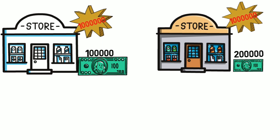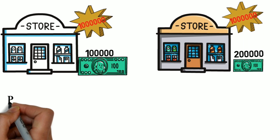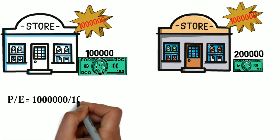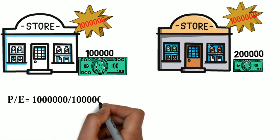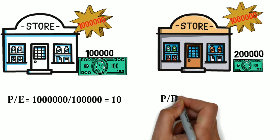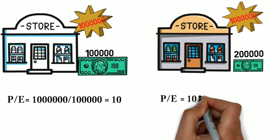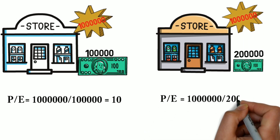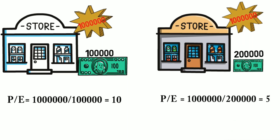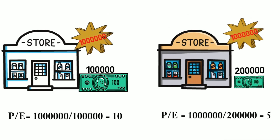If the value is 10 lakhs and the income is 2 lakhs, then it is 10 divided by 2, which is 5 — meaning the P/E is 5. If you want to buy a shop, then you can find the best value for money.